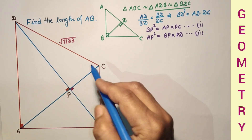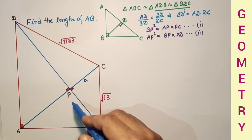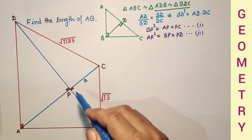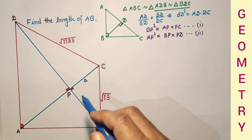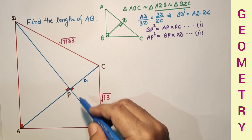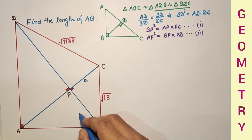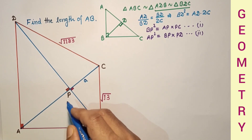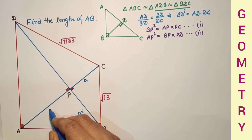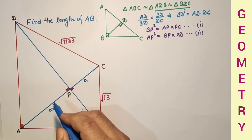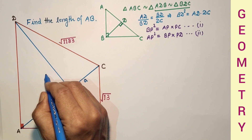Let us suppose PC is 'a', and PB, PC, PB, and PA are in geometric progression. So let PC = a, PB = ar, PA = ar², and PD = ar³. So PC, PB, PA, PD are a, ar, ar², ar³ respectively.